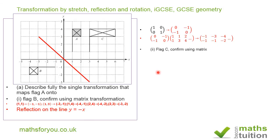Now for flag A to flag C. Taking a point on the object, the coordinates are (1, 1), which transforms to (3, 1). Note that the y-coordinates do not change — they stay the same — but the x-coordinate has increased threefold. The area of the object has increased by a factor of three, so this is not a shear. We have enlargement in one direction only, perpendicular to the y-axis.